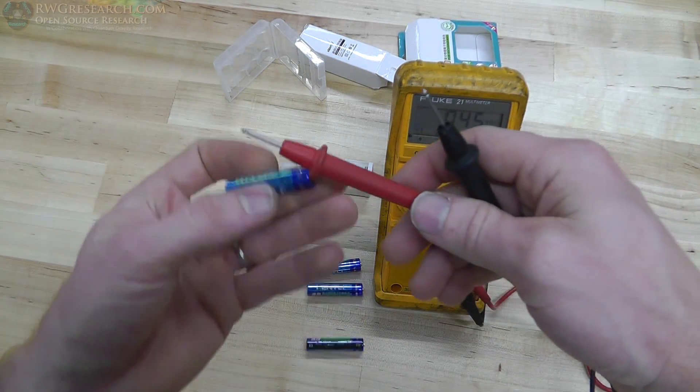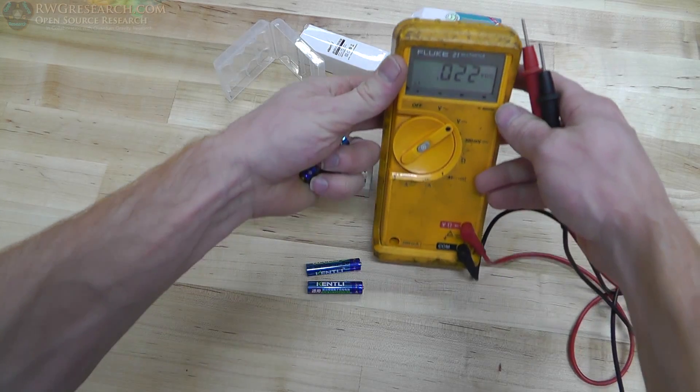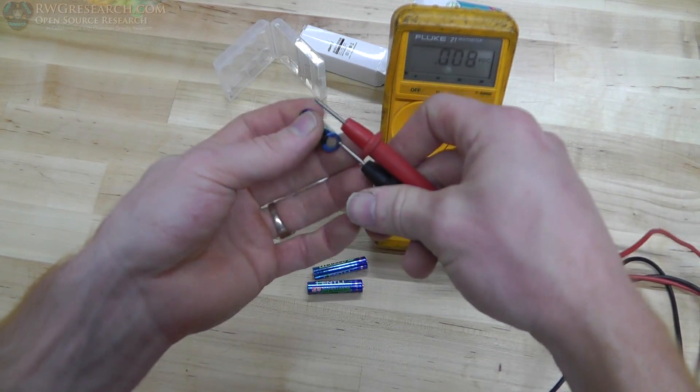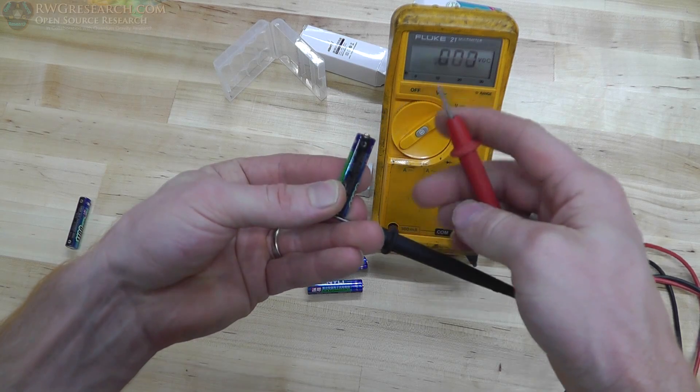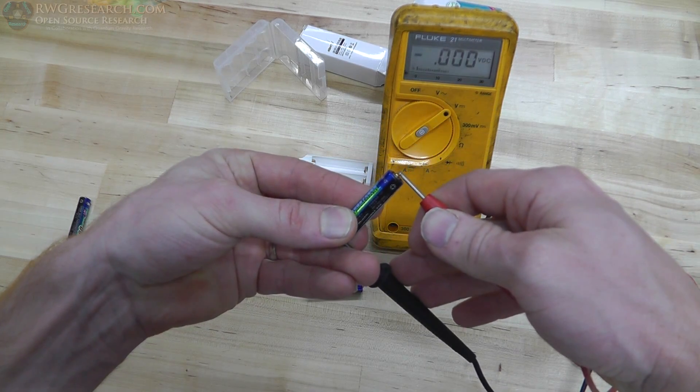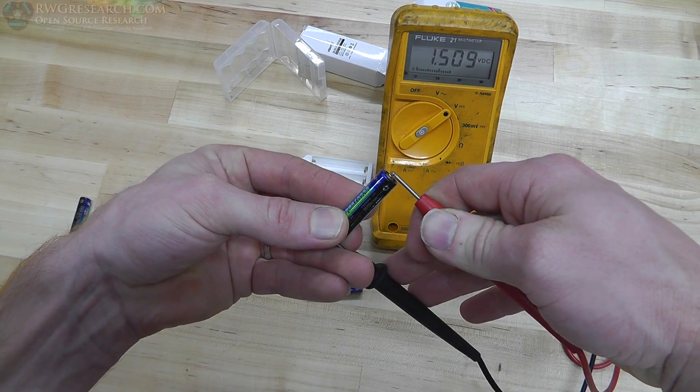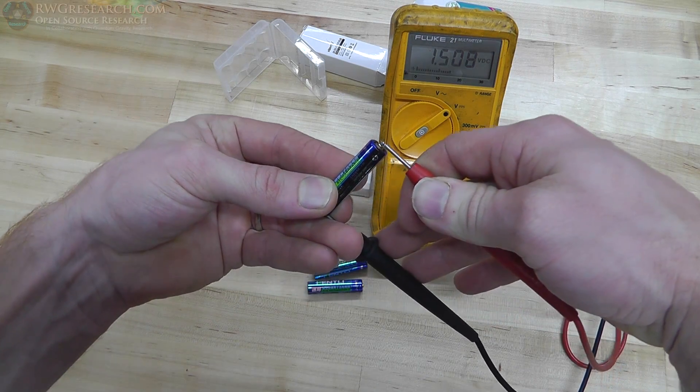So let's hold one of these guys out here. It's on DC. That one's rolling off the table. So from this point to this point, yes, indeed. Look at that. 1.5 volt exactly. All right.